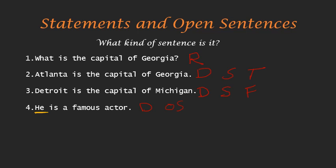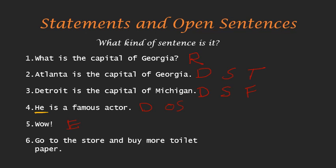"Wow!" — this is exclamatory, meaning we're expressing some emotion. "Go to the store and buy more toilet paper." This is imperative — it's a command to go do something. Notice that we can only assign true or false values to statements; we can't say if an imperative or exclamatory sentence is true or false.